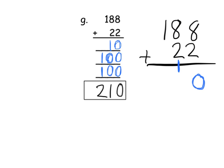Of course, we could compare that with the standard algorithm: eight plus two is ten — zero with a bundle being regrouped. Then eight tens plus two tens plus one ten is eleven tens — one ten left over with ten tens bundled into a hundred. One hundred plus one hundred equals two hundred. We get the same exact answer, but the idea for this lesson is to teach the totals below method — this alternate algorithm.